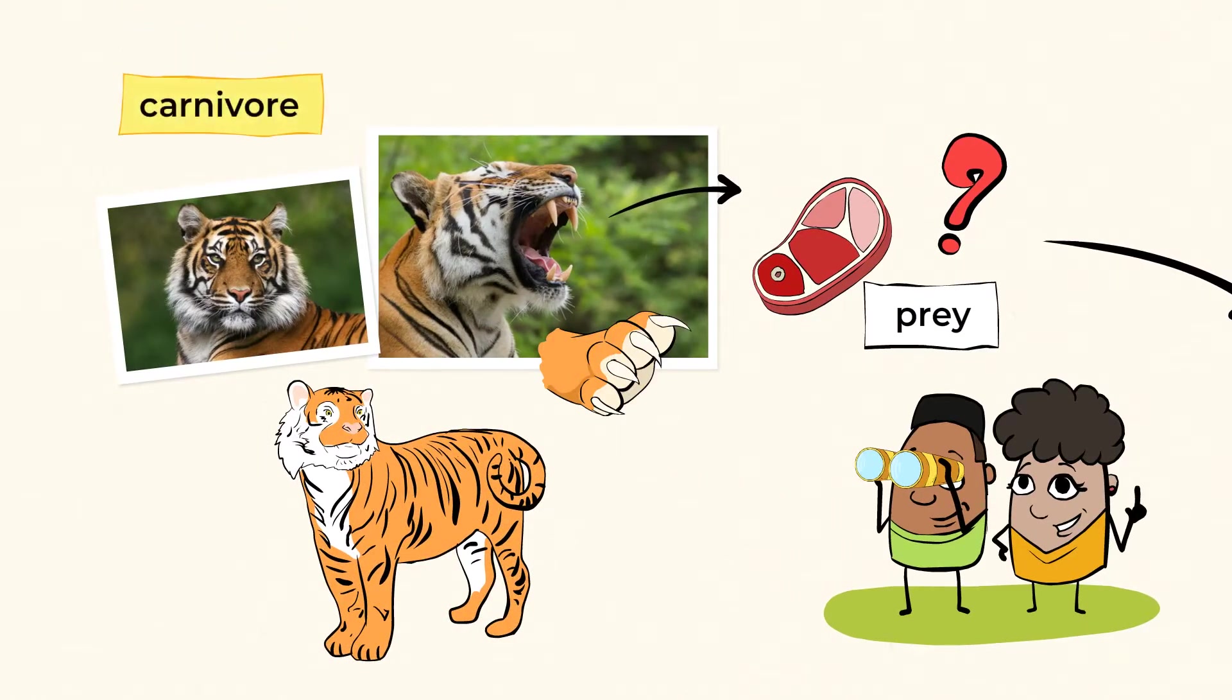Tigers are carnivores. Carni-what? A carnivore is an animal that eats meat, or in other words, a meat-eater.